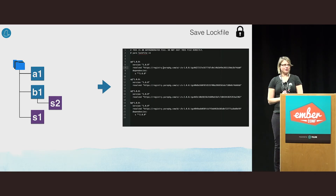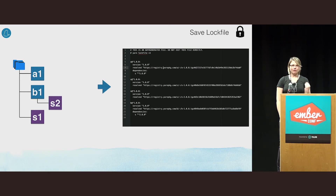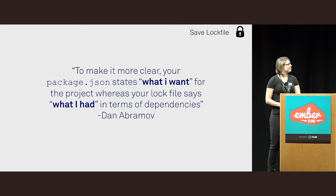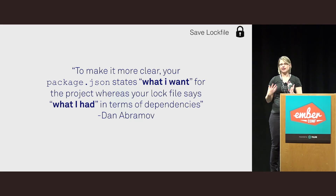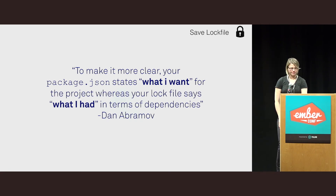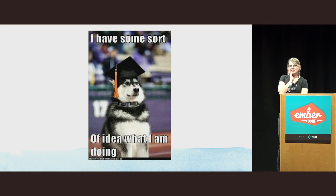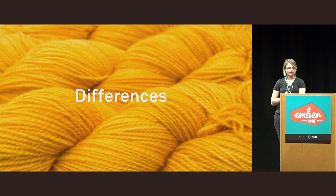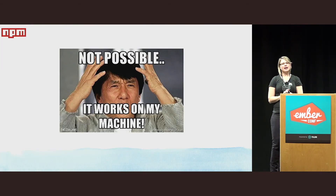There's one step I hid from you — a very important step and a major difference between Yarn and NPM. Yarn writes a lock file. This lock file contains the full dependency graph and all the versions Yarn has installed. In Dan Abramov's words: your package.json states what you want for the project, whereas your lock file says what you had in terms of dependencies. It's essentially a snapshot of the current node_modules folder.